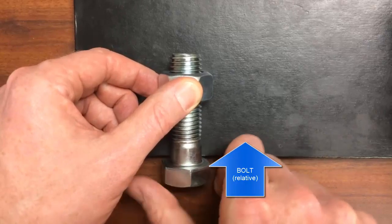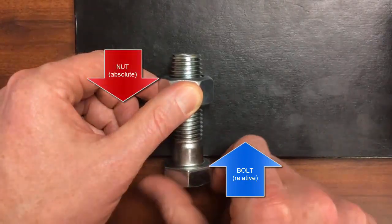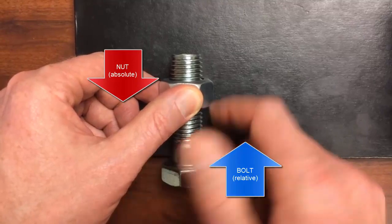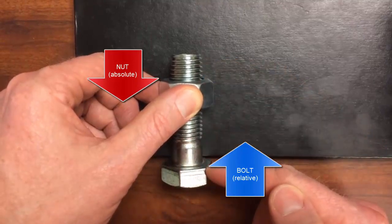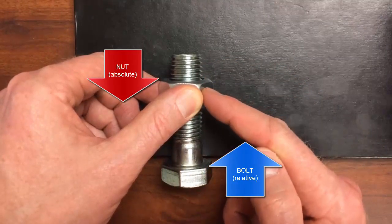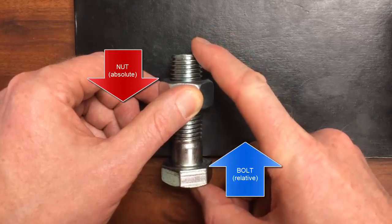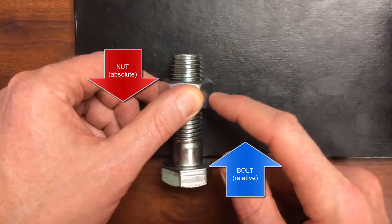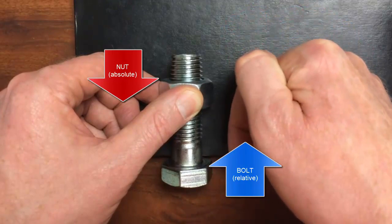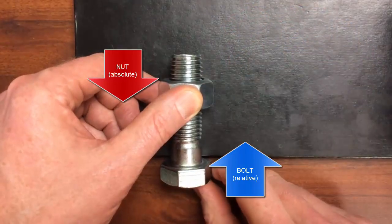The bolt doesn't move, but you'll notice the nut is actually moving down here toward the head of the bolt. So we said that the nut is moving in the opposite direction of the bolt, so therefore we don't allow that bolt to move. This nut will travel down this direction down toward the head of the bolt.